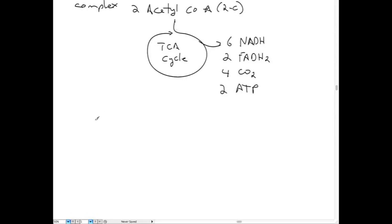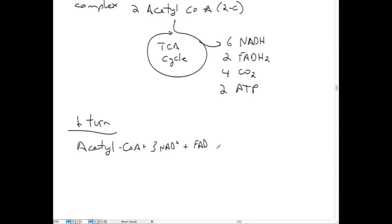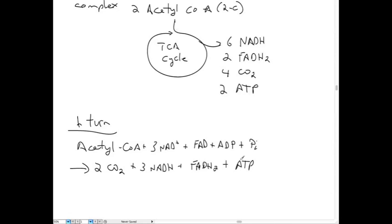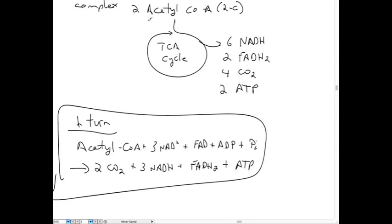The overall reaction formula for one turn of the TCA cycle is: acetyl-CoA + 3 NAD + FAD + ADP + Pi → 2 CO2 + 3 NADH + 1 FADH2 + ATP. For every molecule of glucose, we make two turns of the TCA cycle, so all these values are doubled when asked per molecule of glucose.